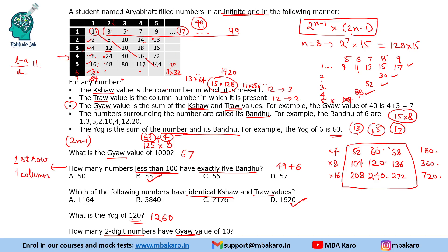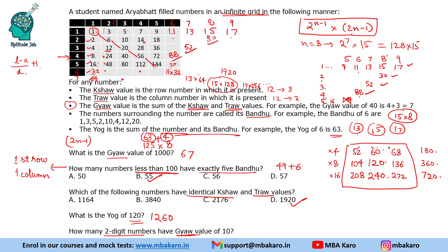Looking at this in the grid: after 9 we have 11, 13, 15 and 17 in columns 6, 7, 8 and 9 respectively. 5+5 is not possible as it gives a 3-digit number. Taking 6 and 4: 8×11 = 88; 4×13 = 52; 2×15 = 30. These are the 4 two-digit numbers with Gyo value of 10. The answer is 4.